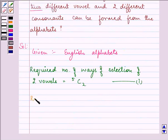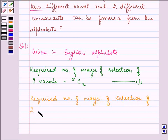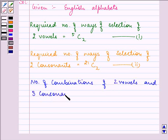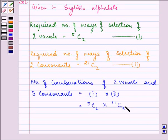The required number of ways of selection of 2 consonants - out of 21 we are selecting 2. On applying the multiplication principle, the number of combinations of 2 vowels and 2 consonants is 5C2 multiplied by 21C2.